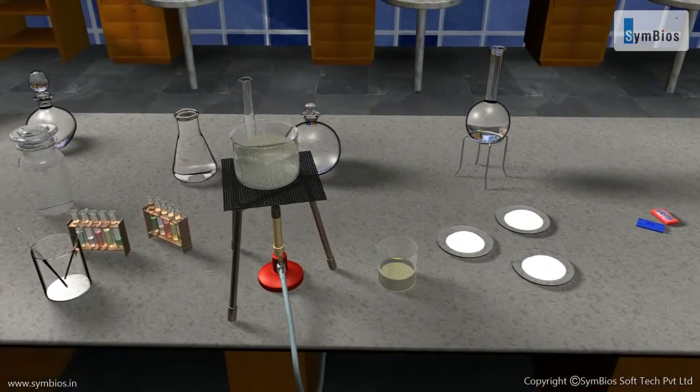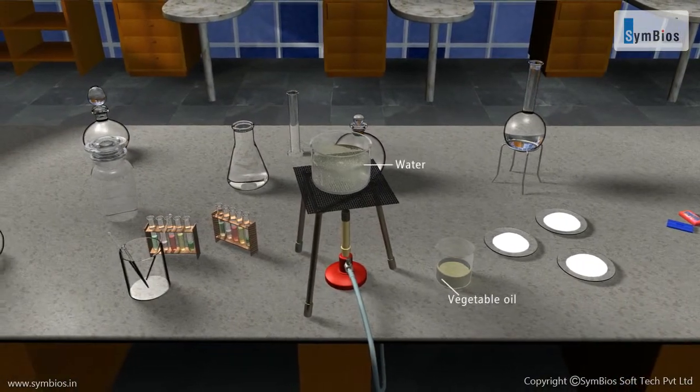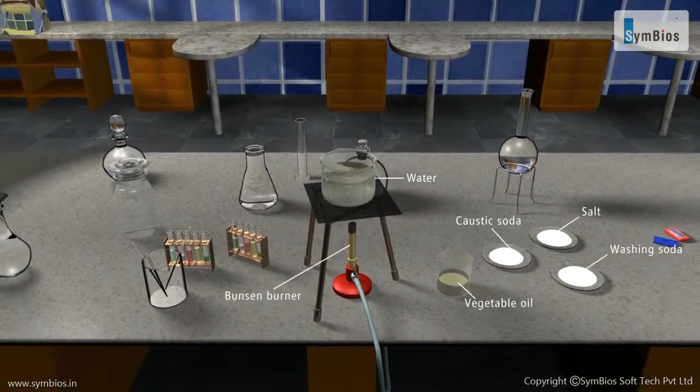For preparation of soaps, we require vegetable oil, water, caustic soda, salt, washing soda, a Bunsen burner, and a glass rod.